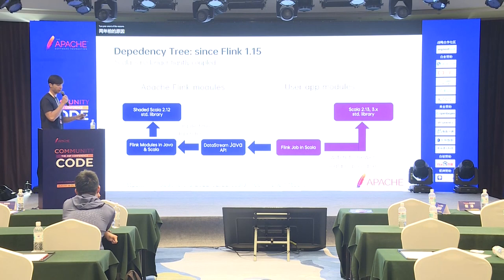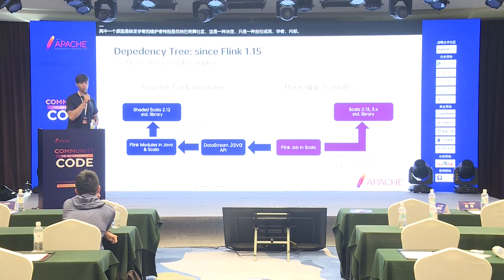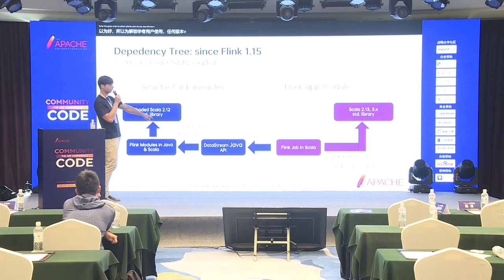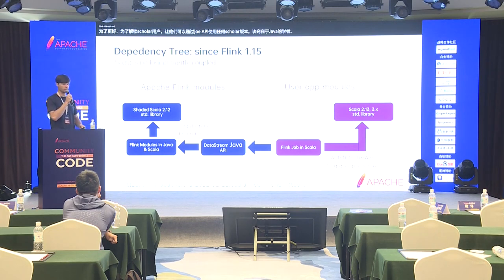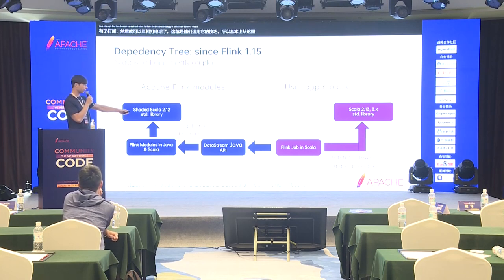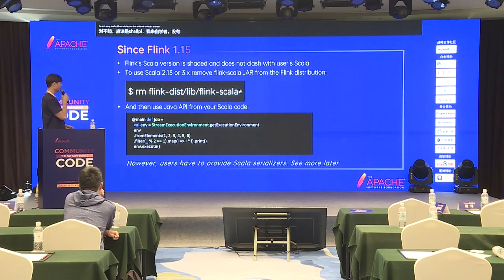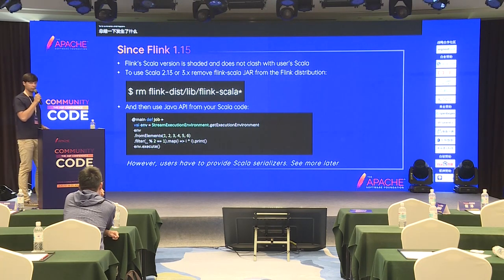One of the reasons was the lack of Scala maintainers in the Apache Flink community specifically. The decision was to hide Scala internally in the code, to unlock Scala users to use any Scala version via the Java API. The trick is that Scala and Java have interop — they can call each other. So basically in this release, you can now use the Java API from Scala, and that will work without a problem. To summarize what happened since Flink 1.15...